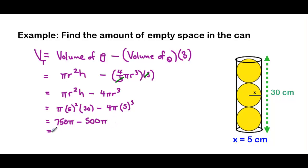And we can treat these like like terms. So 750π minus 500π is 250π. Or 250π.